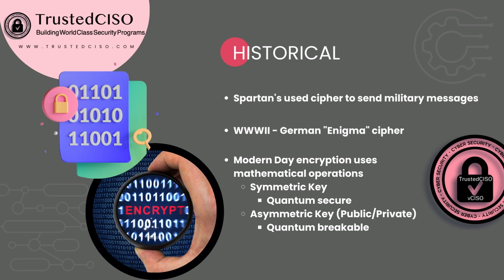In modern history, we saw this with World War II and the German Enigma cipher — once that was broken, it turned the war. For modern cryptography, we have symmetric keys, which are quantum-secure, such as AES-128 or AES-256. Asymmetric keys — the public-private key pair — tie into X.509 certificates with the public key, but these are quantum-breakable. Quantum-secure versions are already being developed.